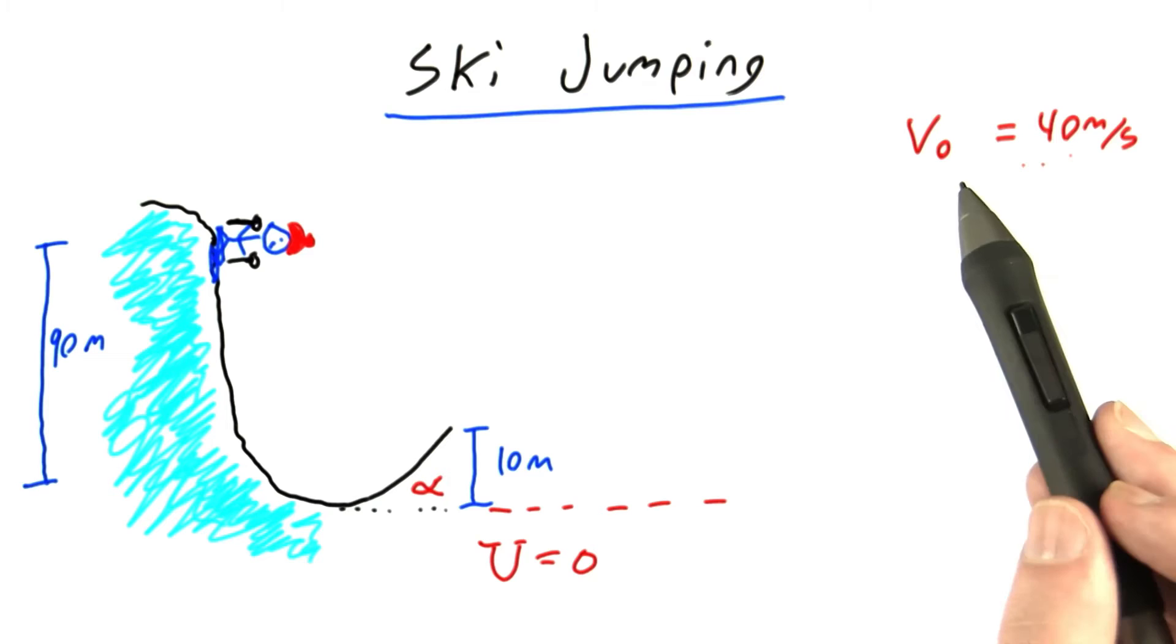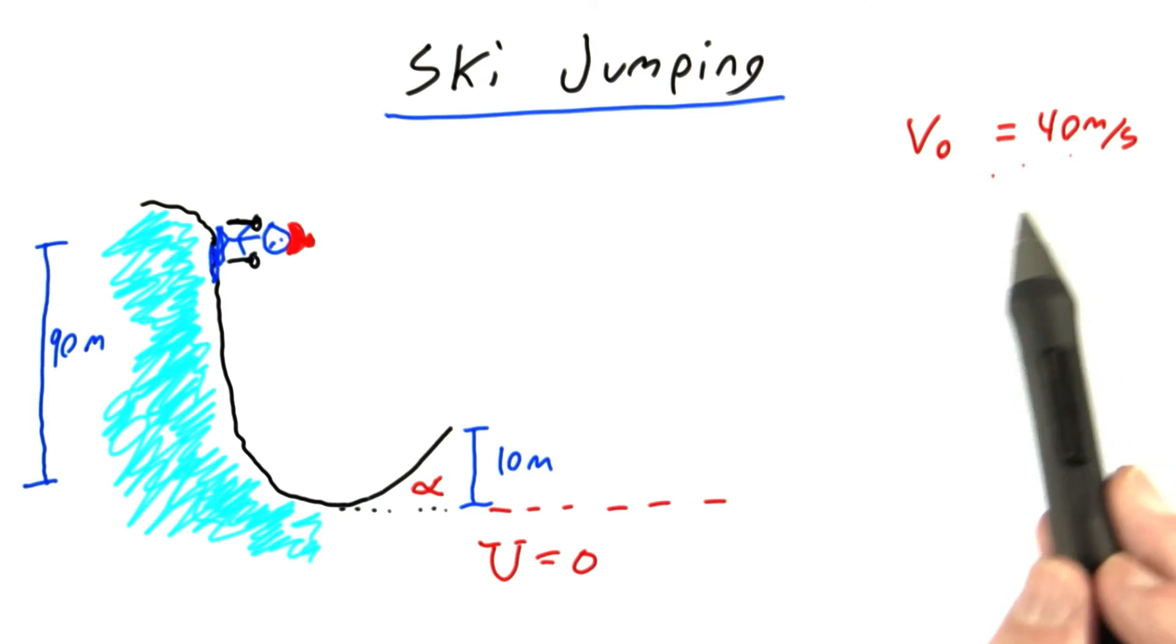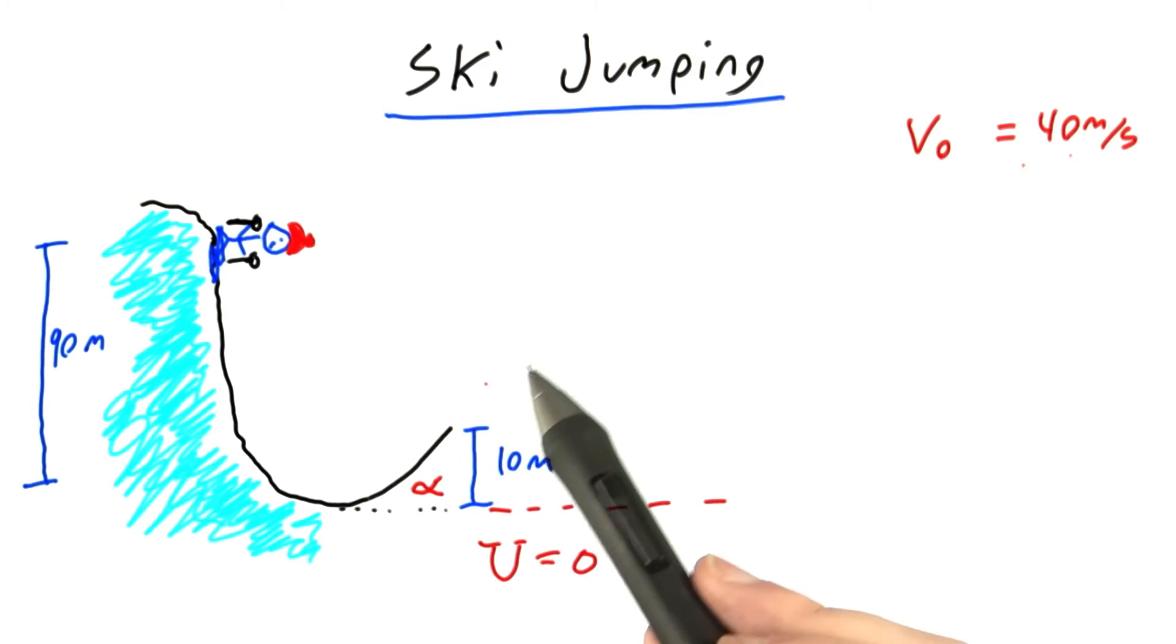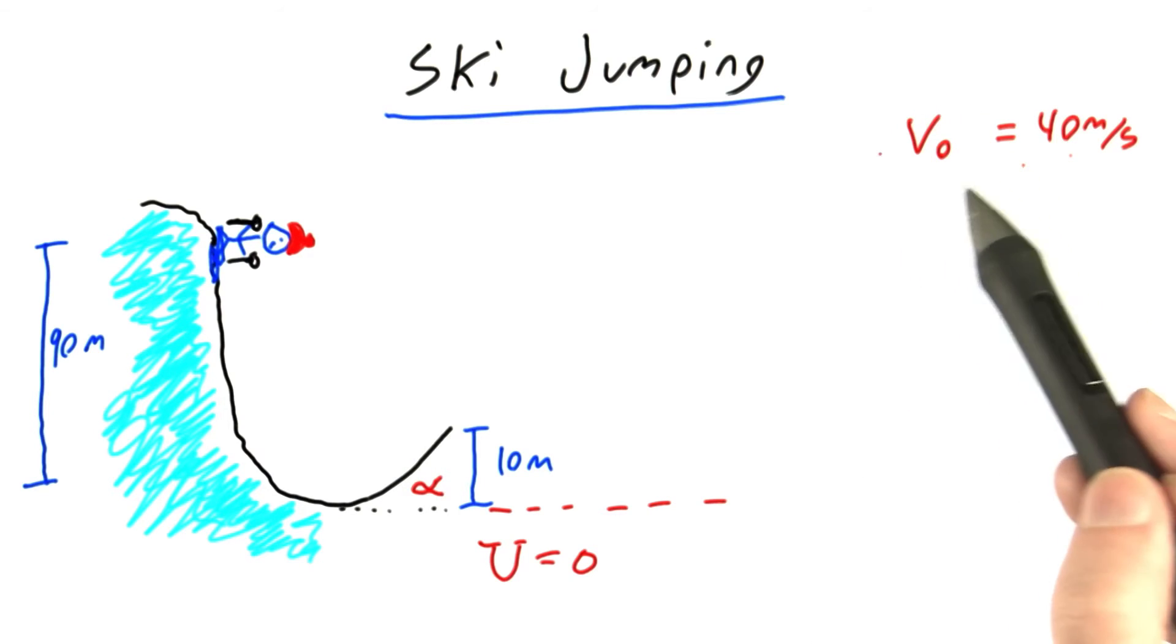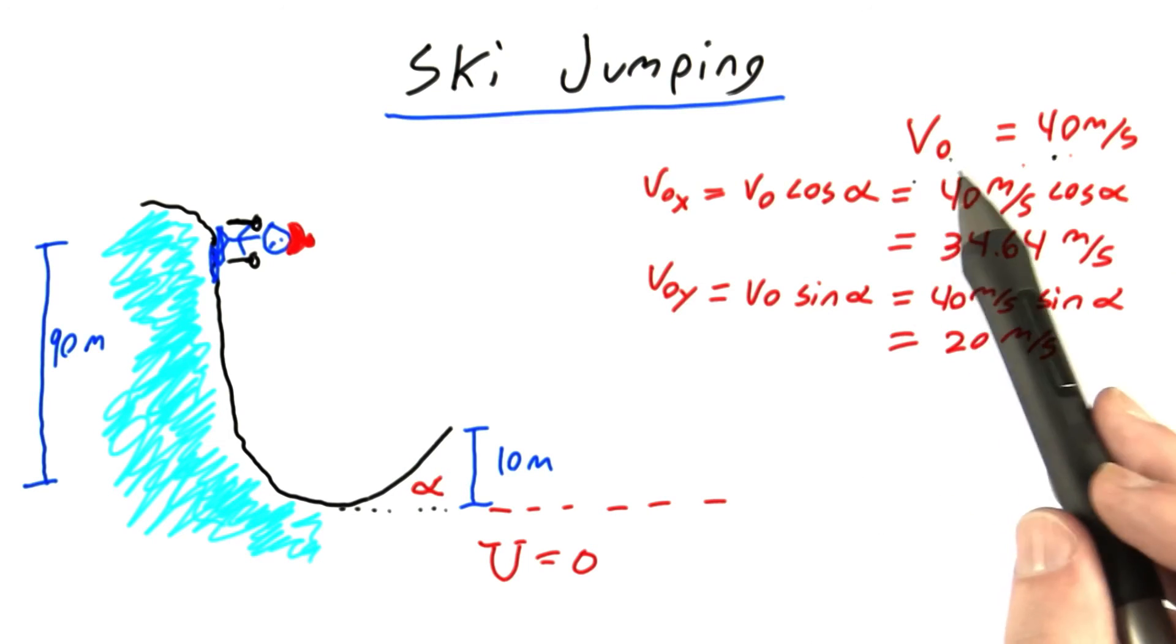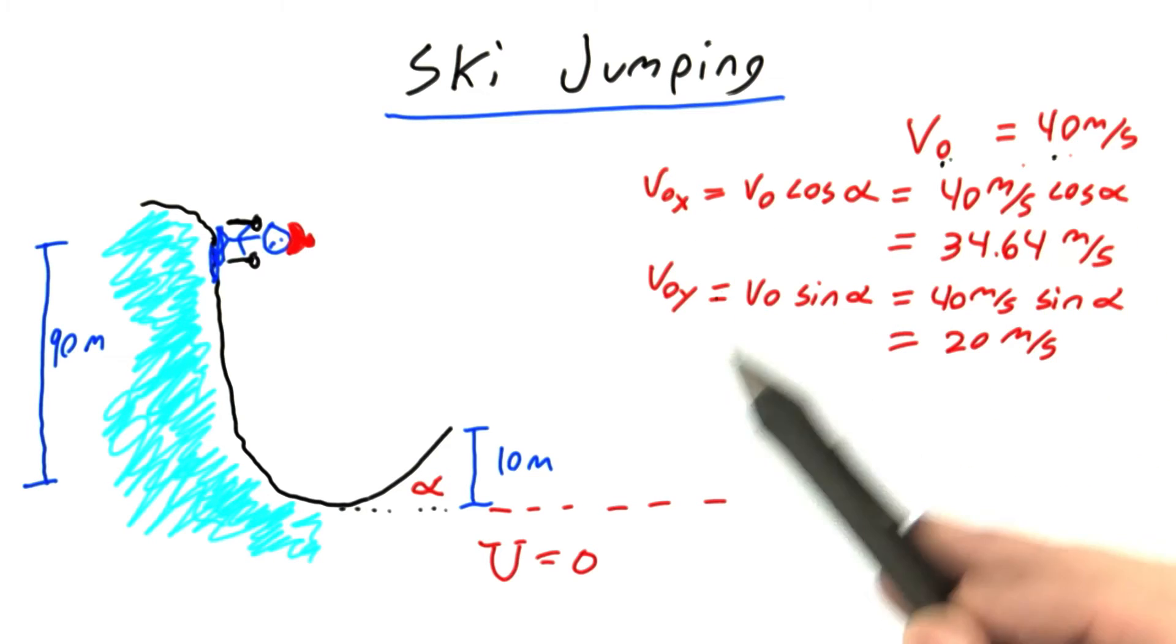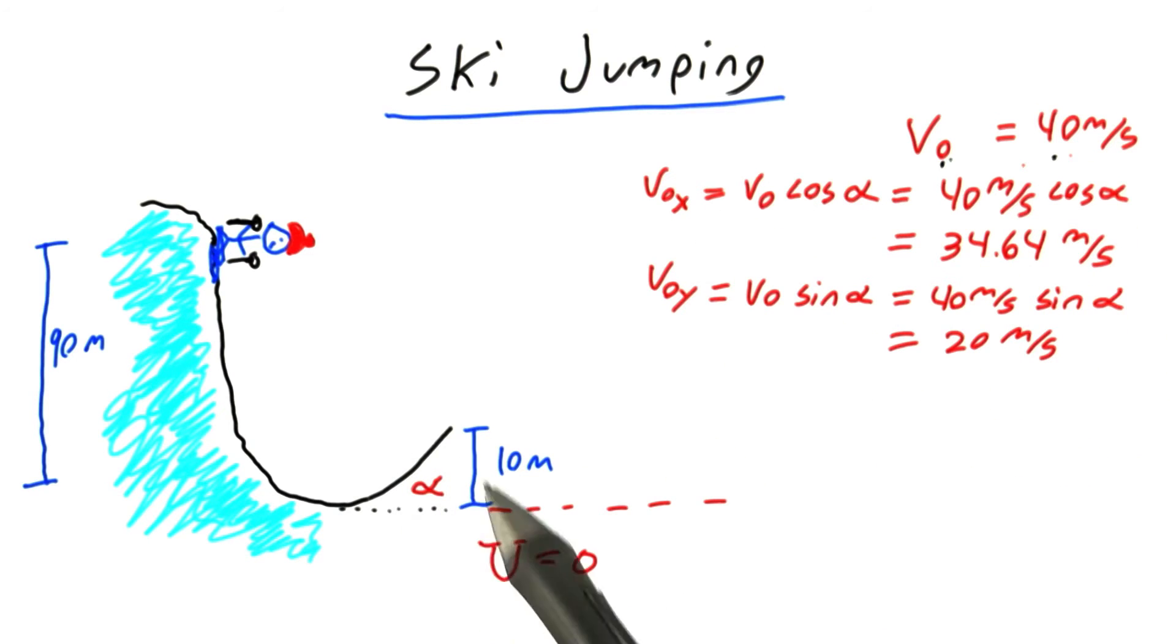But now, that 40 meters per second is the original speed for the second part of the problem when the skier is flying through the air. That's why I'm using the convention of calling this V₀ now. The first thing I'll do is break this original velocity into x and y components based on this angle alpha.